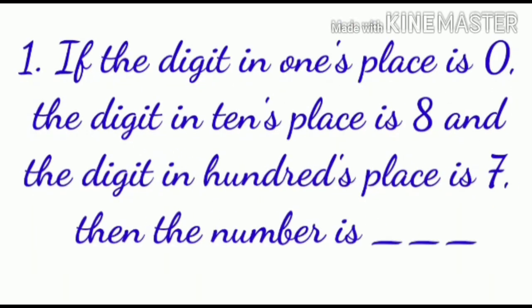Number 1: If the digit in 1's place is 0, the digit in 10's place is 8, and the digit in 100's place is 7, then the number is? Hmm? Very good. The answer is 780.